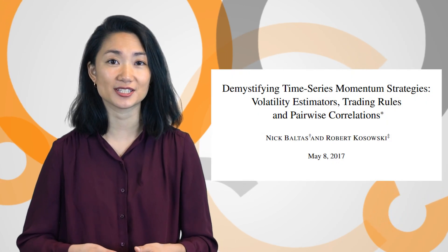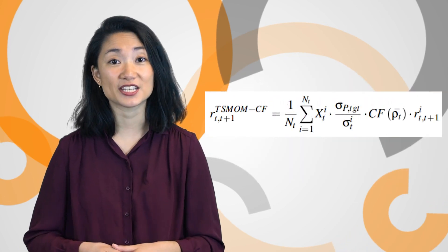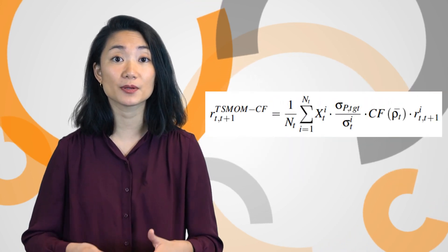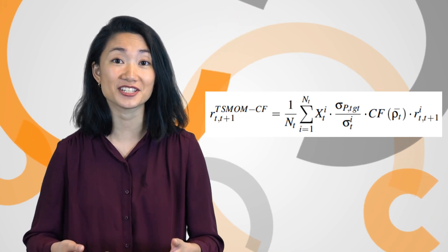This week one of our team members Alethea implemented the 2017 paper Demystifying Time Series Momentum Strategies by Nick Baltus and Robert Kozowski. Alethea's implementation addresses weaknesses from typical time series strategies by adjusting the allocation of assets according to their correlation.